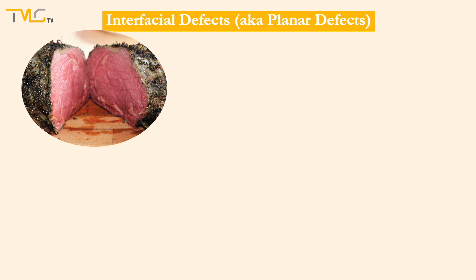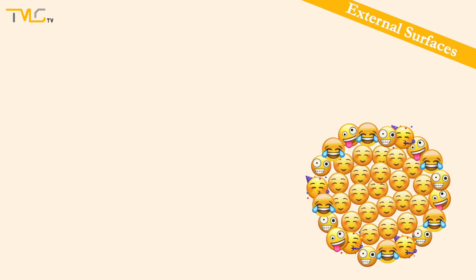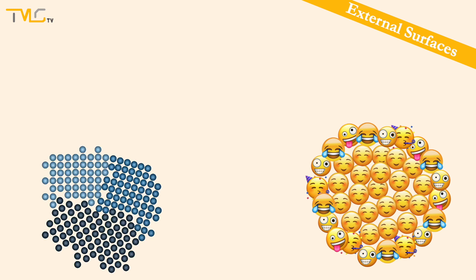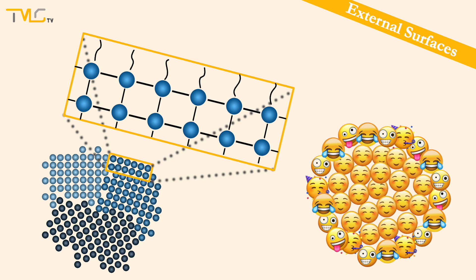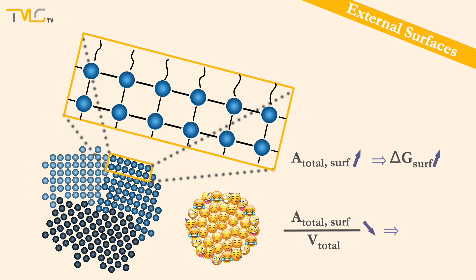Next, we will talk about the last group of crystal defects, which are interfacial defects, also known as planar defects, such as external surfaces, grain boundaries, phase boundaries, and twin boundaries. Surfaces of the material where the interface is in contact with the external environment are considered an interfacial defect, since some bonds of the surface atoms are free at the material-environment interface. Therefore, the total surface Gibbs free energy increases as the material-environment interfacial area increases. Materials under suitable conditions tend to decrease their total surface Gibbs free energy by decreasing their surface-to-volume ratio to increase their structural stability.